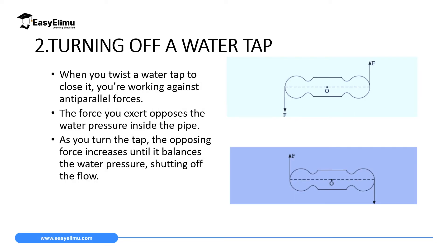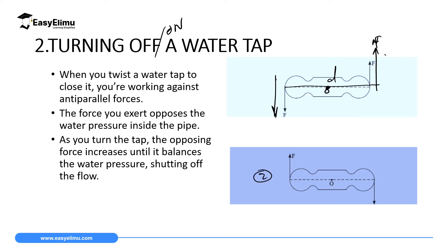Another application of a couple is turning a tap on or off. When you turn a tap, you are using anti-parallel forces. If a tap has a pivot at the middle — call it point O — to turn it on you apply one force downward on one side and another force upward on the other side. If you know the distance between these two forces and the magnitude of one force, you can calculate the moment created by this couple.